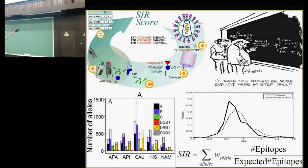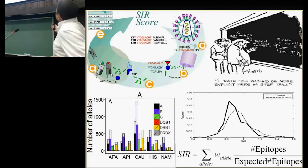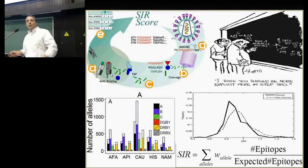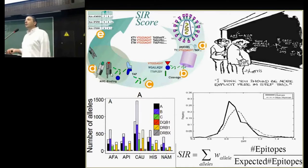Most of what I'll show will be in the Caucasian population, because that's where we have most data, except for some viruses where we focus on the local population where the virus is expressed. Taking this SIR score, everything being random, the score should be just 1 or distributed around 1. Unfortunately, things are not random — viruses present fewer epitopes than you would expect them to present. The reason they express fewer epitopes is because they specifically mutate epitopes to avoid being detected by the immune response.